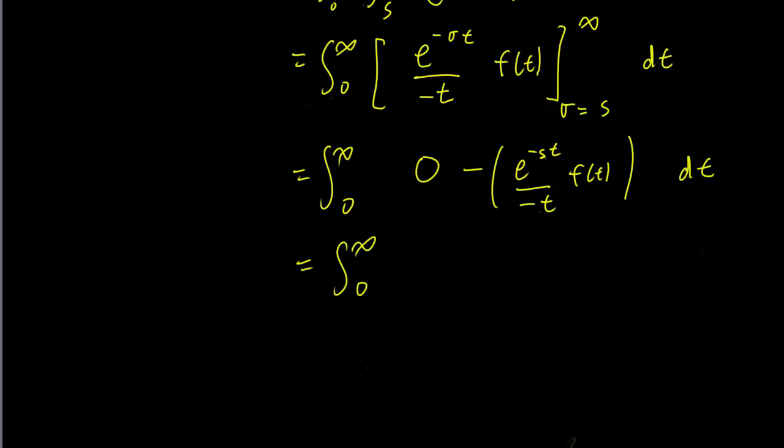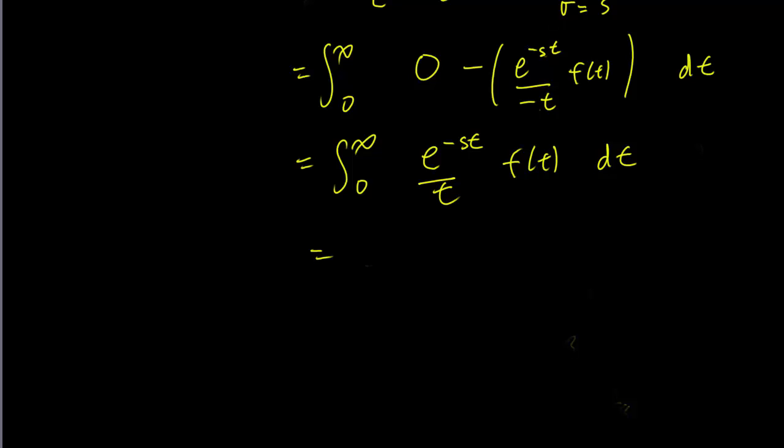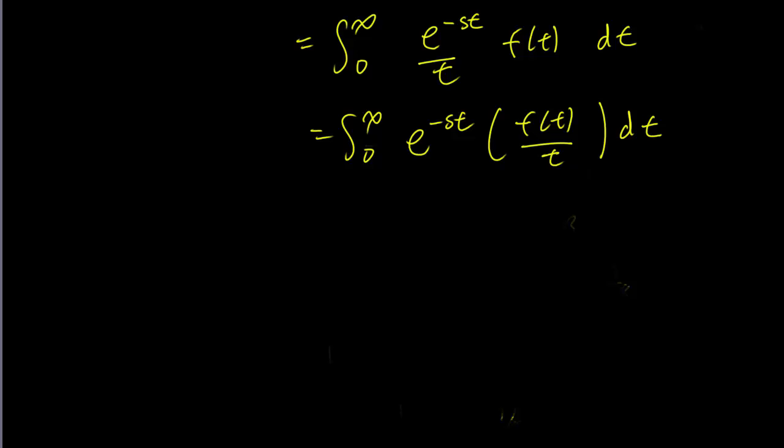So this is just going to be equal to the integral from 0 to infinity of e minus st times ft over t, dt. And we can just rewrite this in this way. And this is, of course, the formula for the Laplace transform of ft over t.